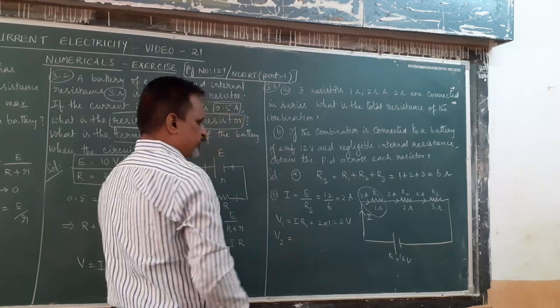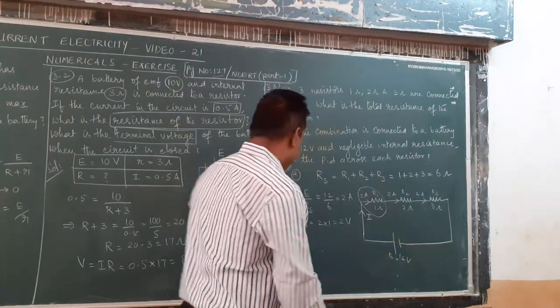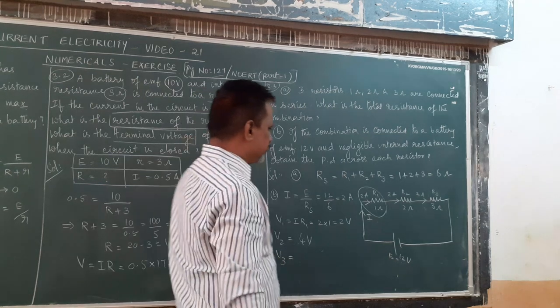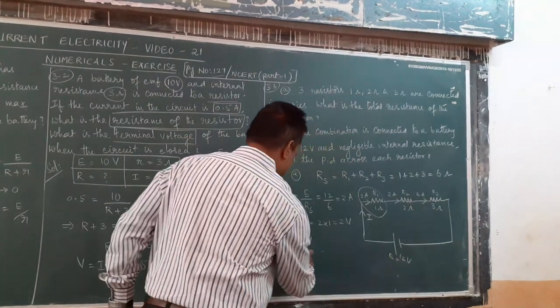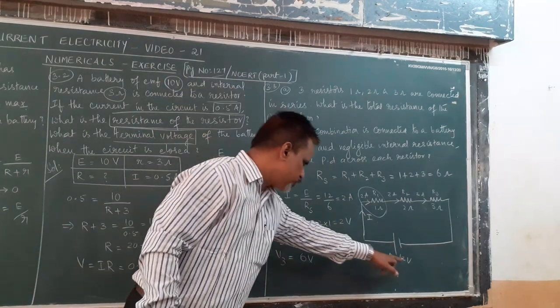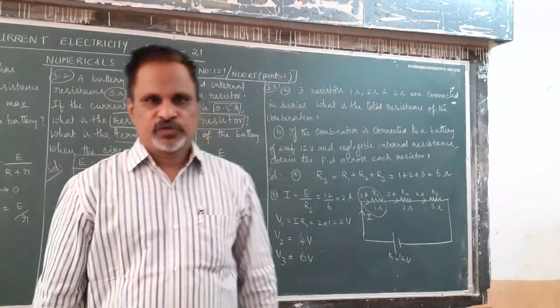V2 equals 2 into 2 equals 4 volt. V3 equals 2 into 3 equals 6 volt. See that the sum of these 3 drops equals 12 volt. This is numerical number 3.